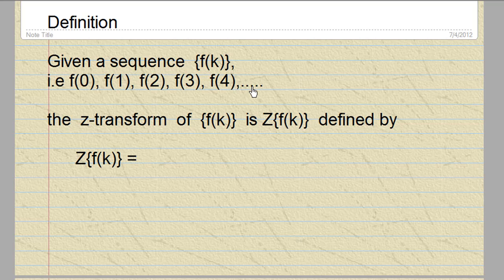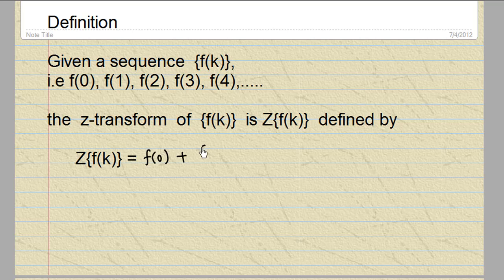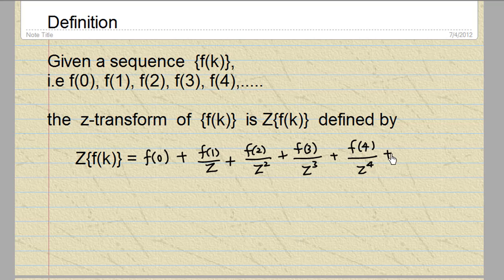The Z-transform of f(k) is denoted by Z{f(k)} and is defined by f(0) + f(1)/z + f(2)/z² + f(3)/z³ + f(4)/z⁴ and so on. In short, this can be written as summation of f(k)/z^k for k equal to 0 to infinity.